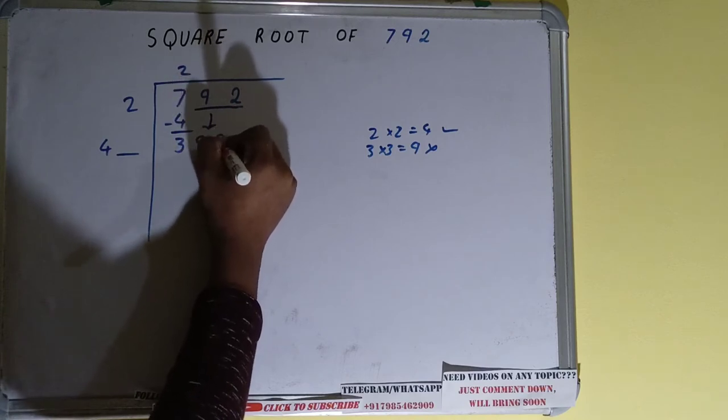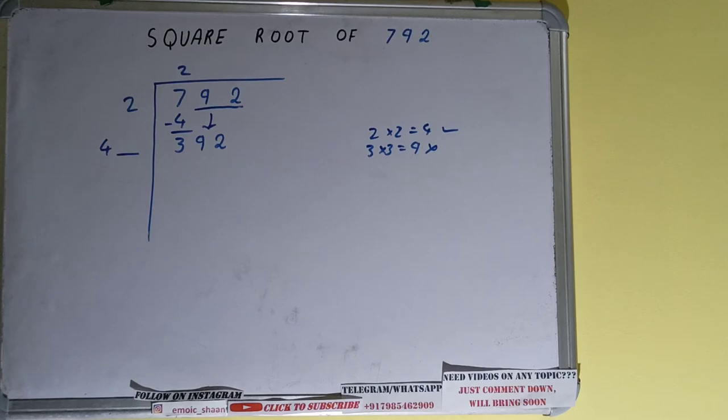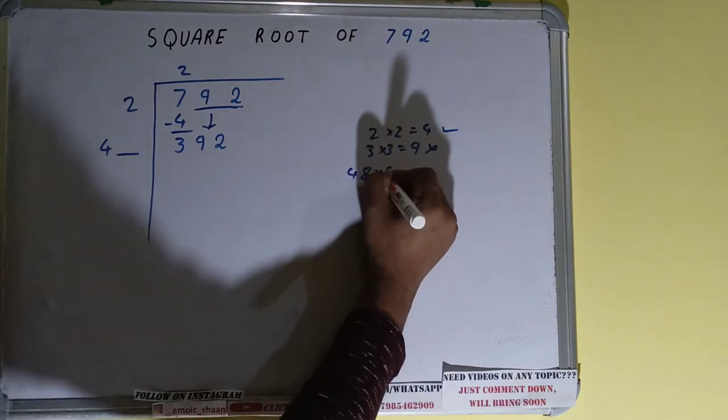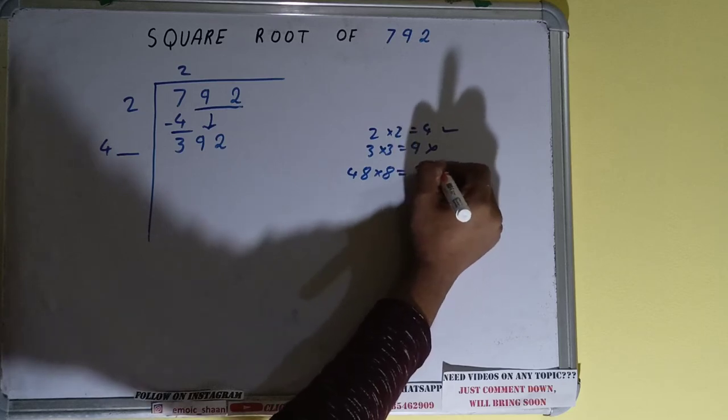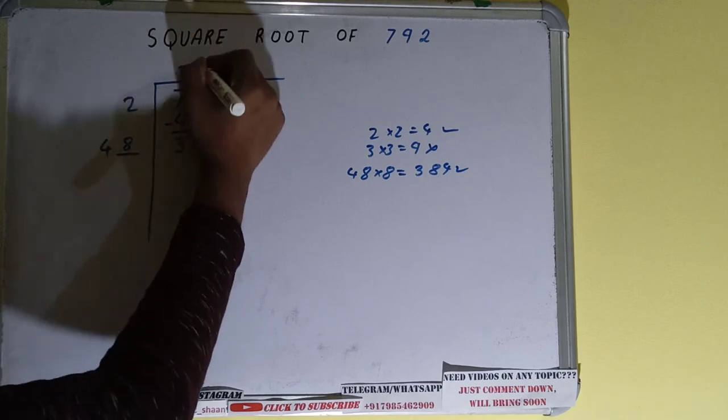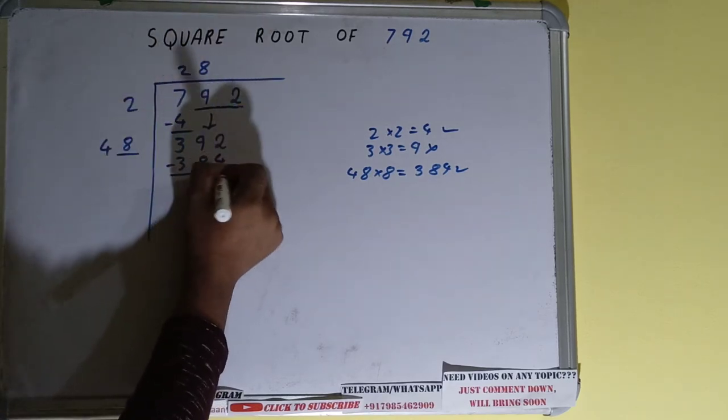Bring the next pair down and it will be 392. Now whatever number you write here we have to write here also. If we try 8, 48 into 8 times it will be 384. That is good to take.